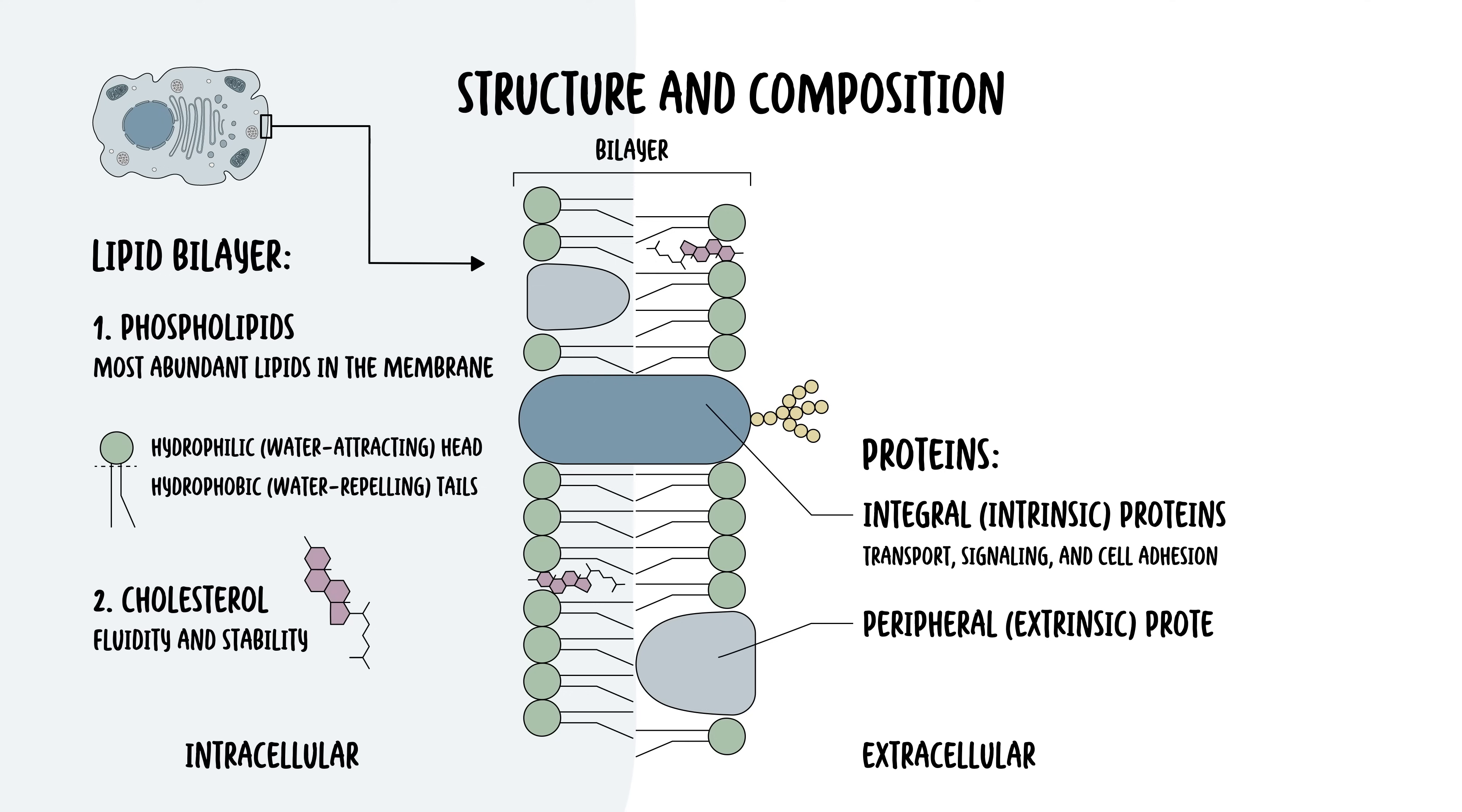The peripheral or extrinsic proteins attach to the surface of the membrane either on the cytoplasmic or extracellular side. These proteins play roles in signaling and maintaining the cell shape.